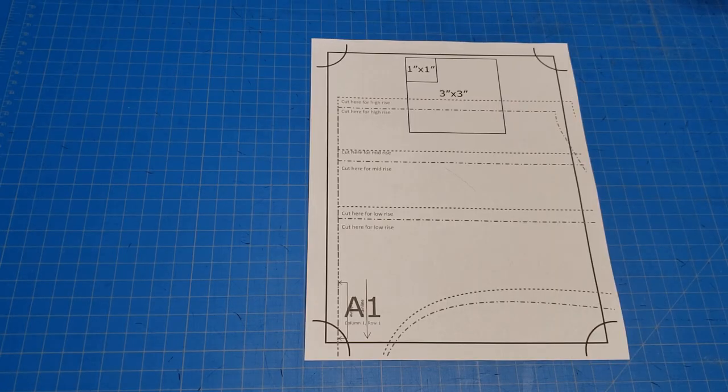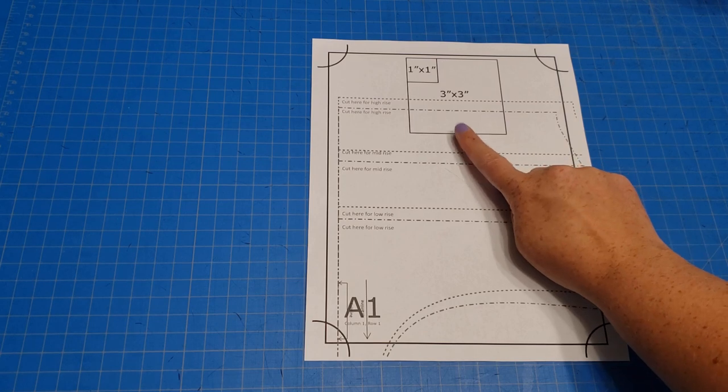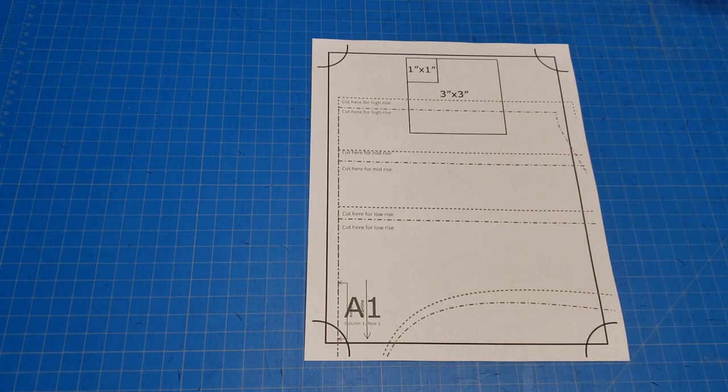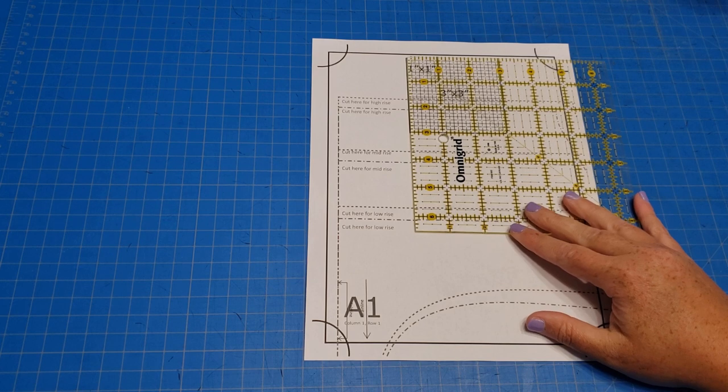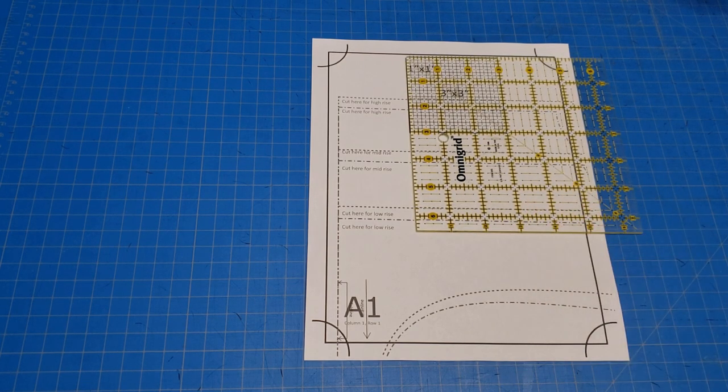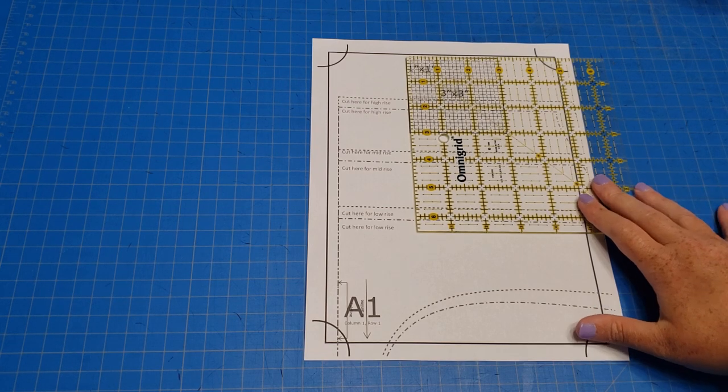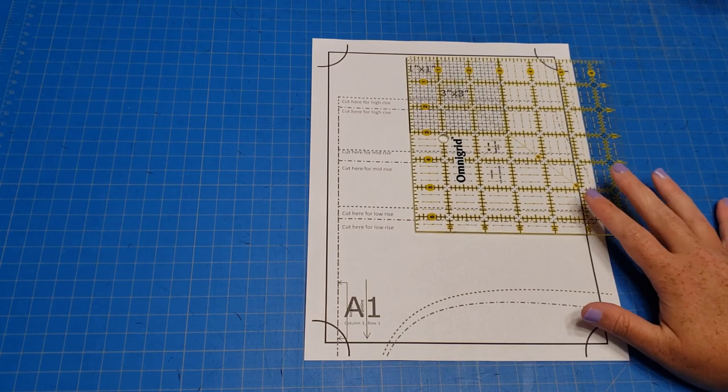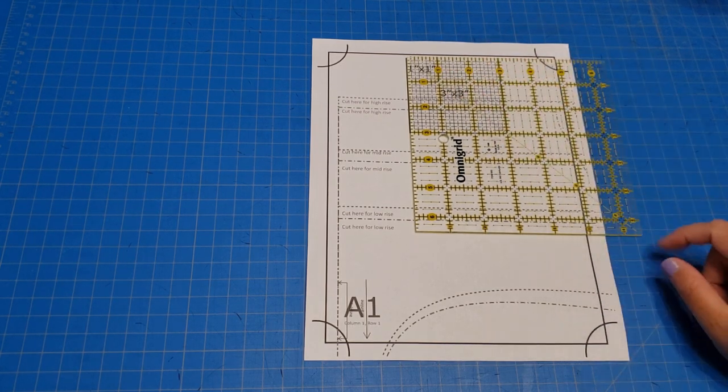Okay, so here we have page two from the pattern, and as we already talked about, this has the one inch and the three inch square on it. You do want to make sure that they are accurately printed to scale. I like to use a gridded ruler that I can see through so I can really see those lines are lining up appropriately at my one and three inch marks.